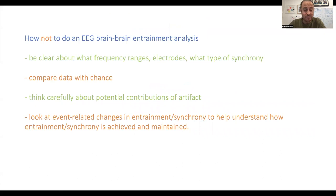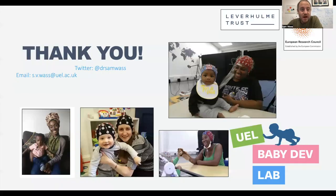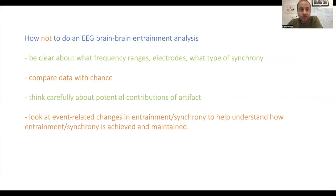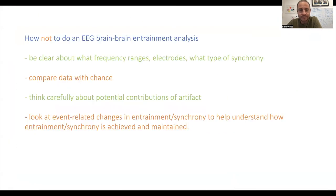To finish: I've talked about how not to do an EEG brain-brain entrainment analysis — the importance of not fishing, pre-specifying frequency ranges, electrodes, and type of synchrony; the importance of comparing observed data with chance as well as between conditions; the potential contributions of artefacts; and my main message that EEG is the method that will allow us to understand how entrainment is achieved and maintained. Then I covered three ways we can use dual EEG beyond measuring behaviour: actor-observer correspondences, mutual anticipation, and shared entrainment to the environment.